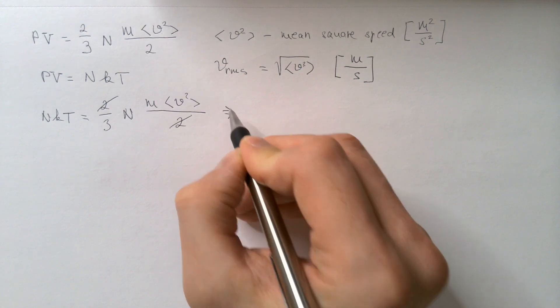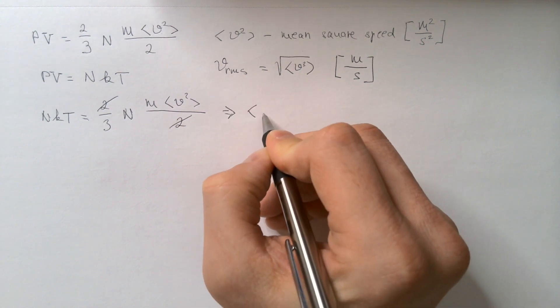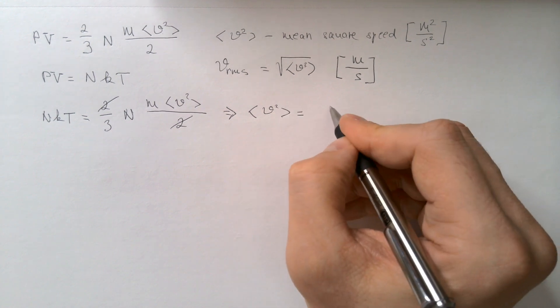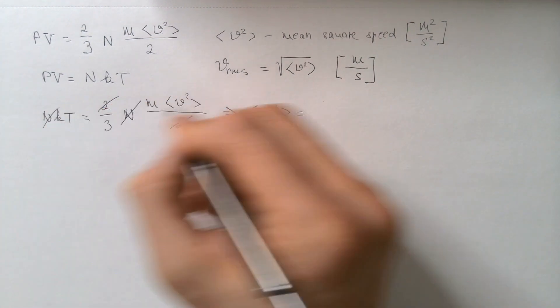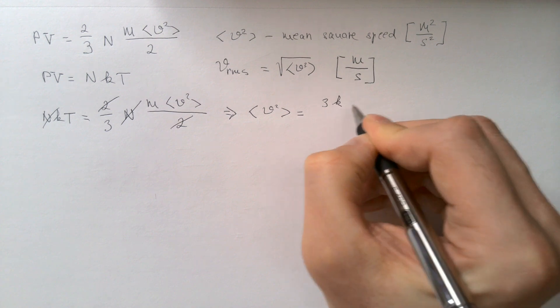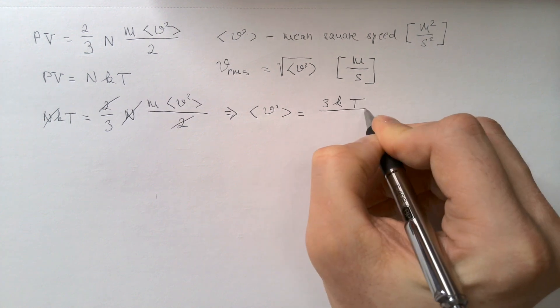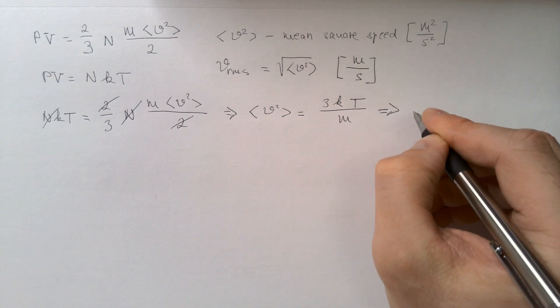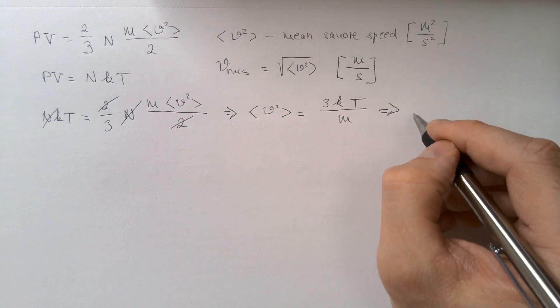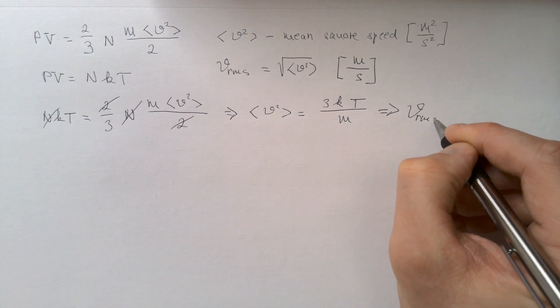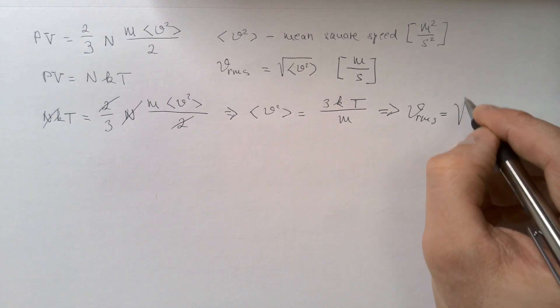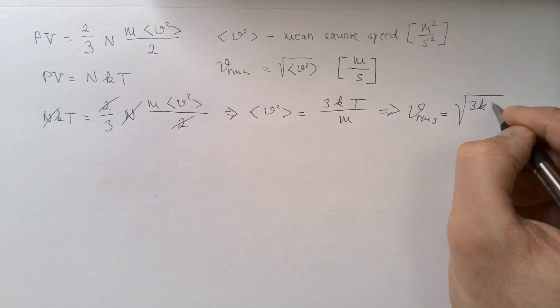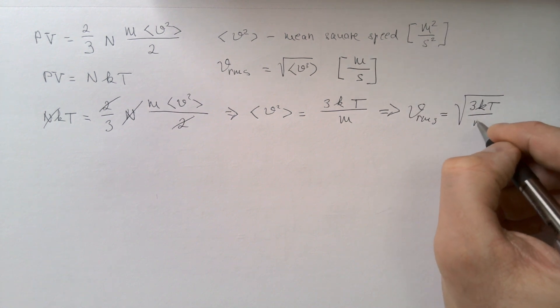So, from here, we see that average of V squared is equal 3 N, and N cancels, 3 times K times T divided by M, which means that if I take square root of both sides, I get that V RMS is equal square root of 3 K T divided by M.